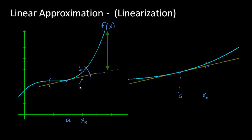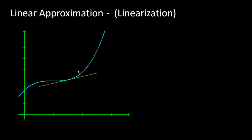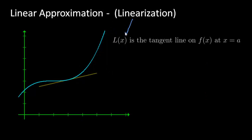Let's stay near a. So L of x — which is what we're going to call the linearization, that's why we have an L — it's going to be the tangent line on f of x at x equals a. So right here, this is L of x, and this is my function f of x.